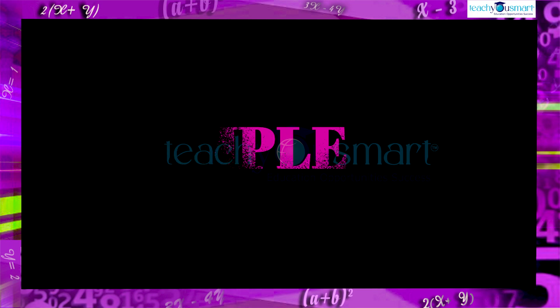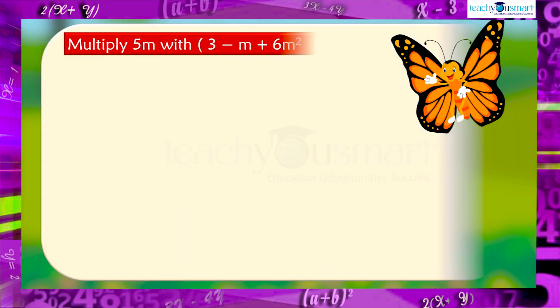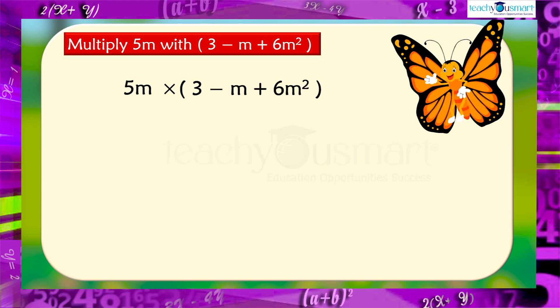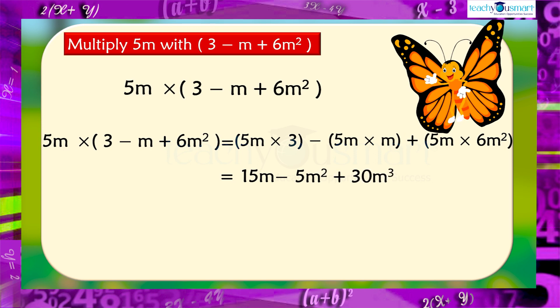Let's do another example. Multiply 5m with 3 minus m plus 6m². 5m multiplied by 3 minus m plus 6m² equals 5m multiplied by 3 minus 5m multiplied by m plus 5m multiplied by 6m² equals 15m minus 5m² plus 30m³.